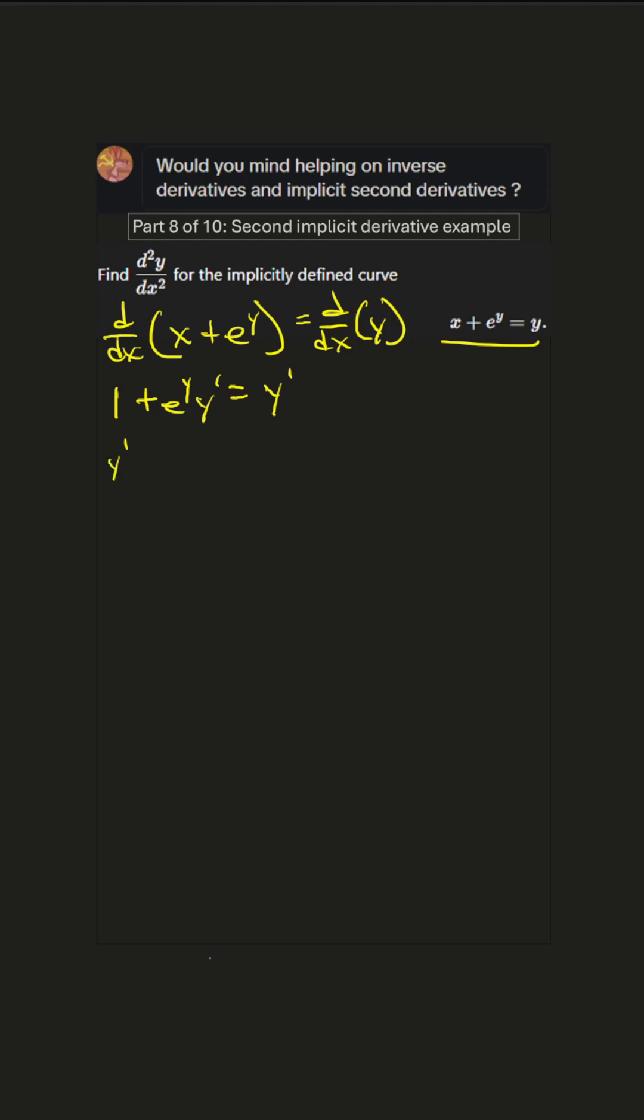Let's get all the y primes on one side, so that'll be e to the y times y prime minus y prime equals negative 1. Factor out the y prime: e to the y minus 1 times y prime equals negative 1. Then we divide and get y prime equals negative 1 over e to the y minus 1. Factor out the negative 1, that's just 1 over 1 minus e to the y.